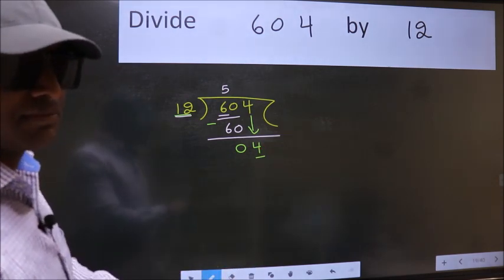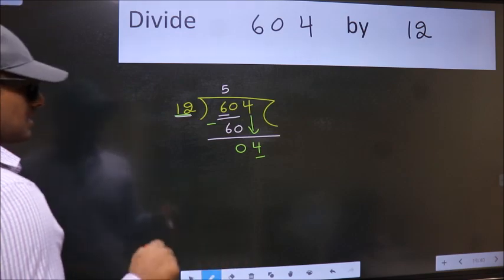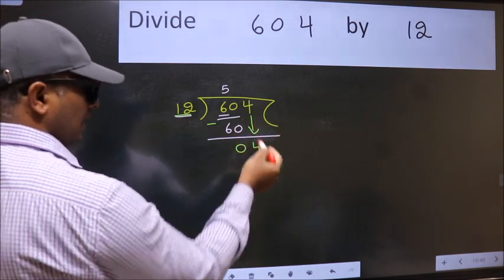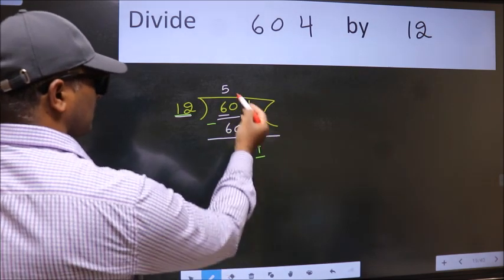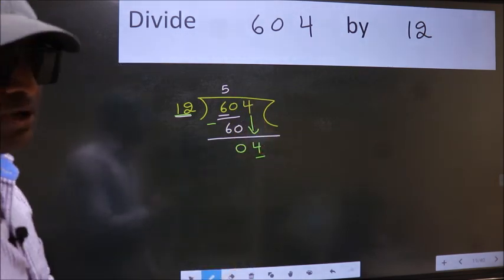Why is it wrong? Because just now you brought this number down, and in the same step you want to put dot, take 0, which is wrong.